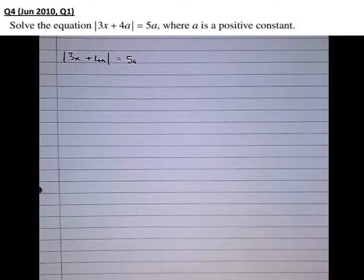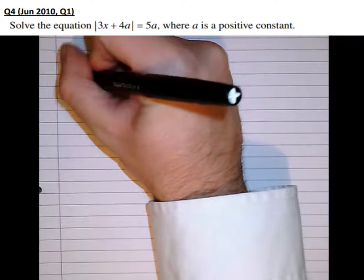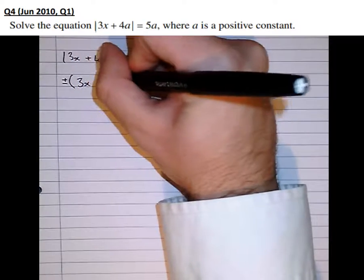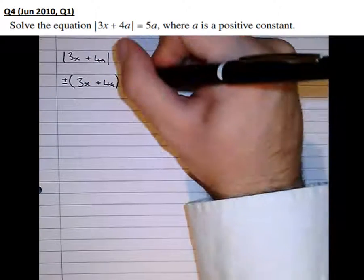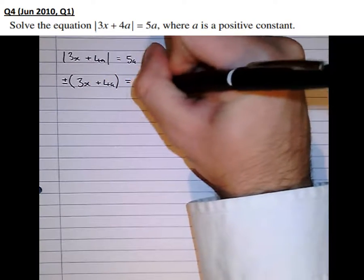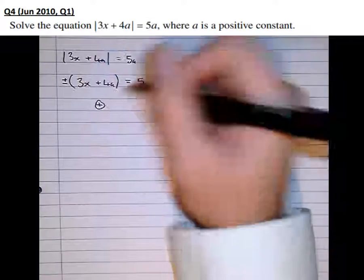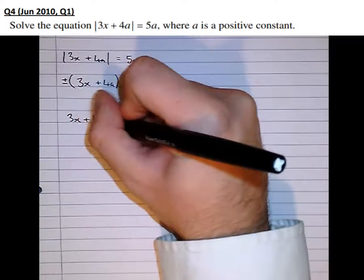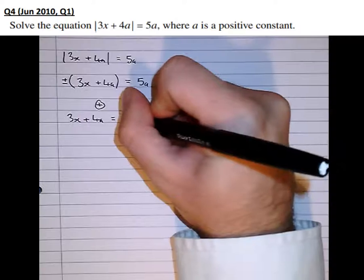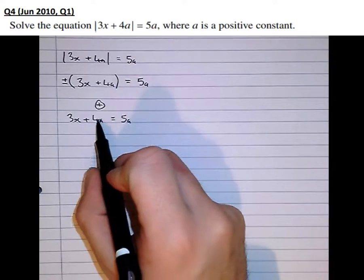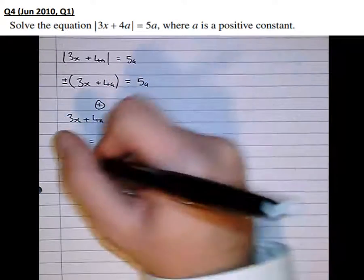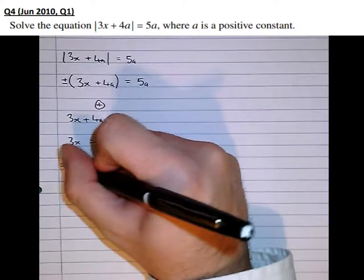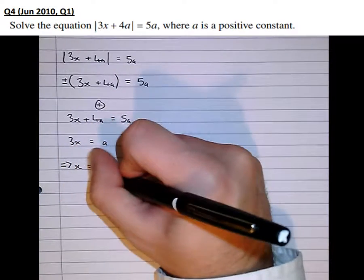So we don't know whether what was in there was positive or negative before we started. So let's solve for both 3x plus 4a plus or minus, that's taking both the positive and the negative case, equals 5a. So let's take the positive case first. So 3x plus 4a equals 5a. Taking that along to the other side, we get 3x equals a. And that means that x equals a over 3.